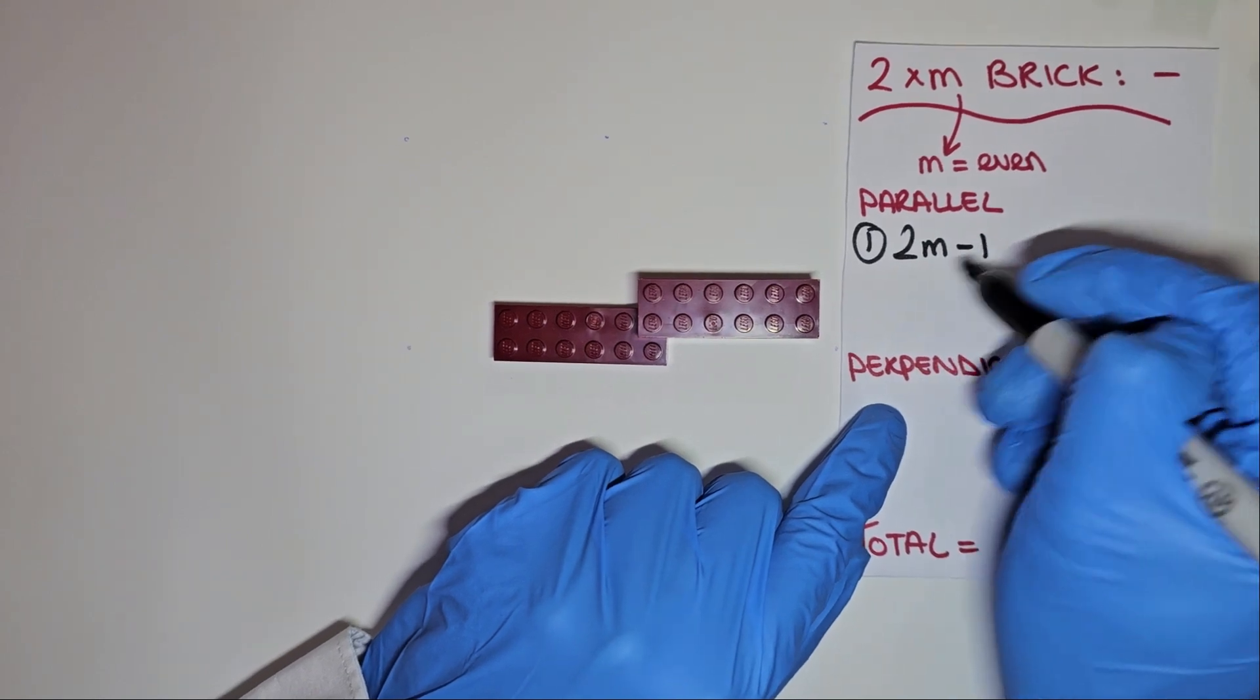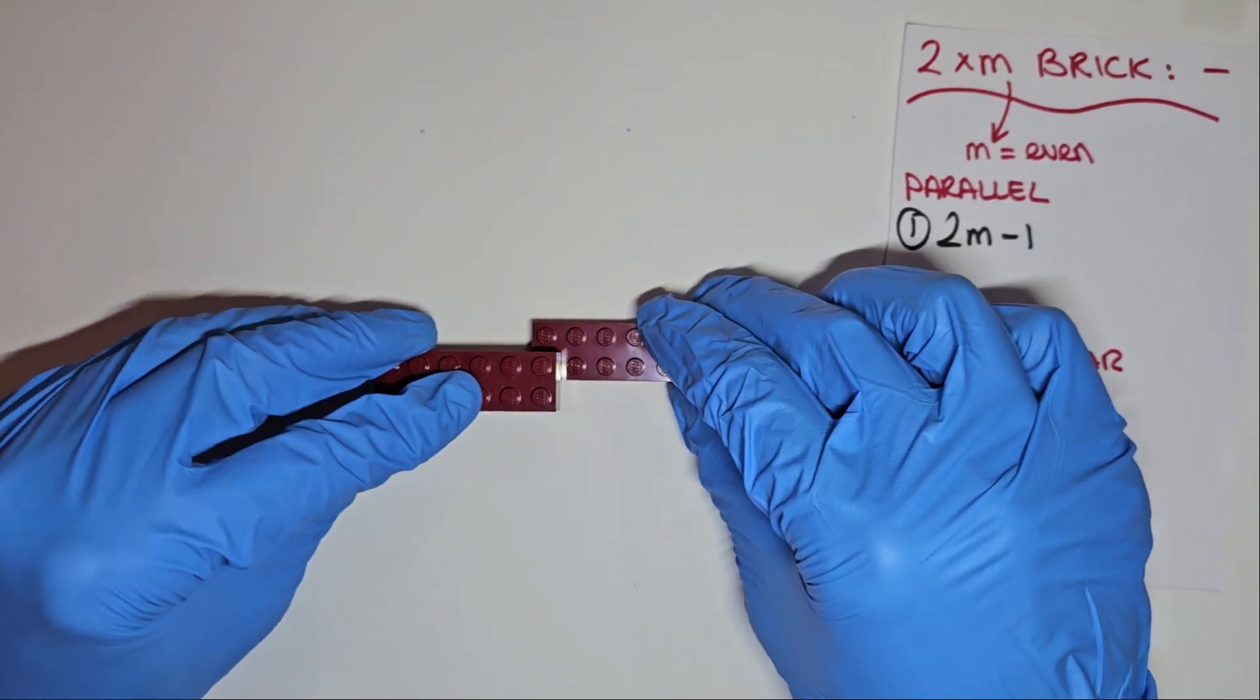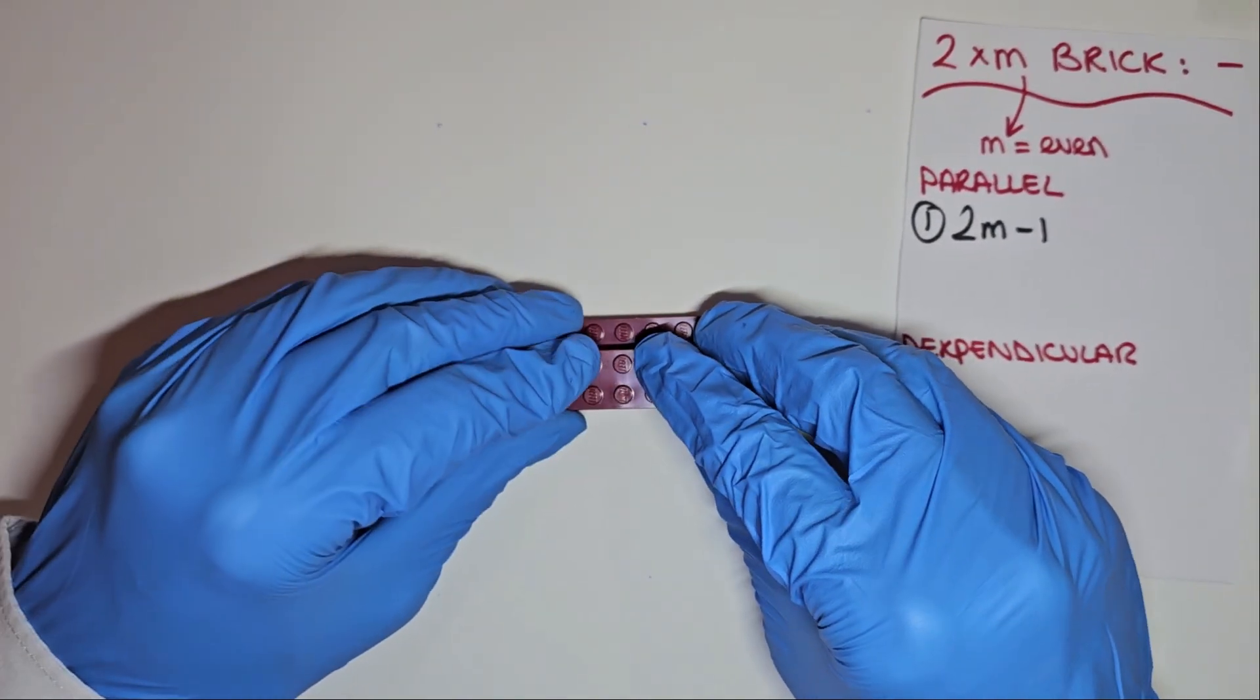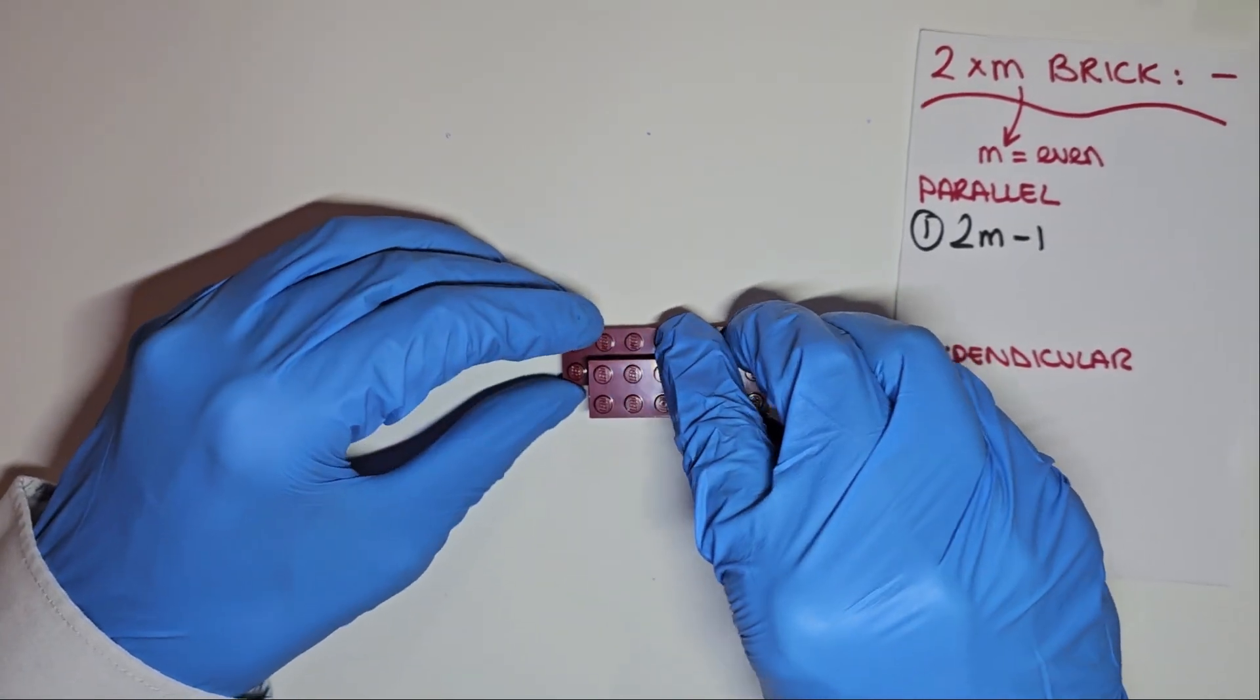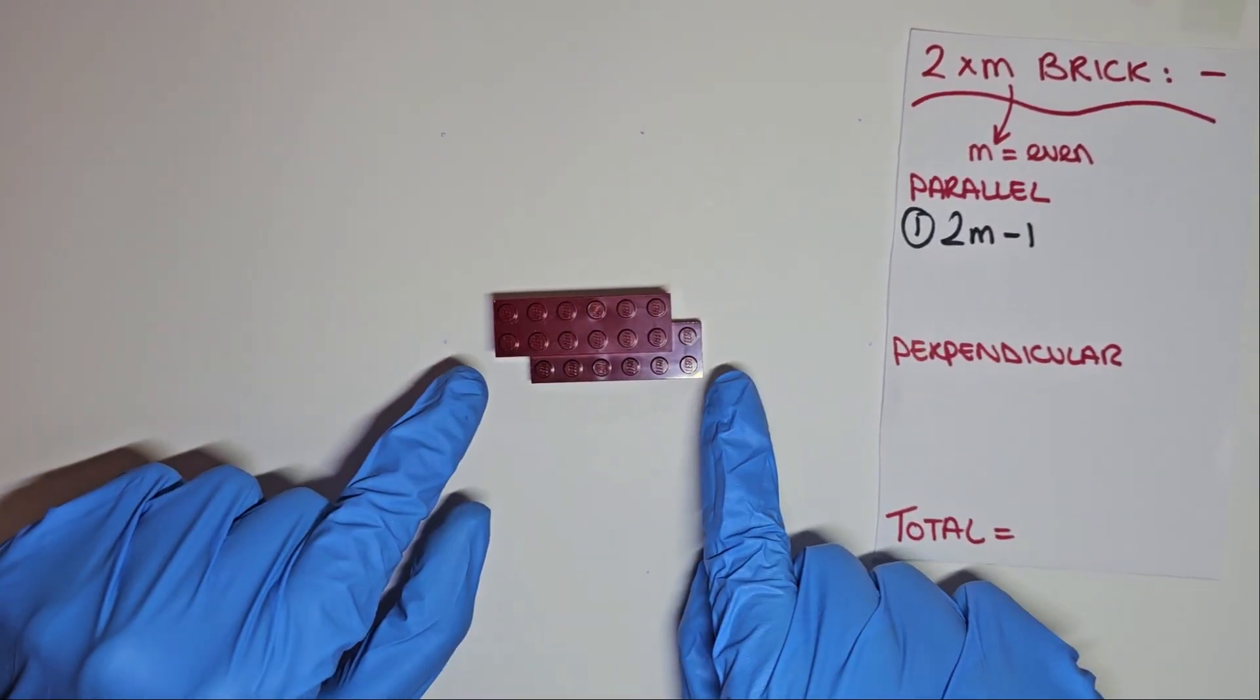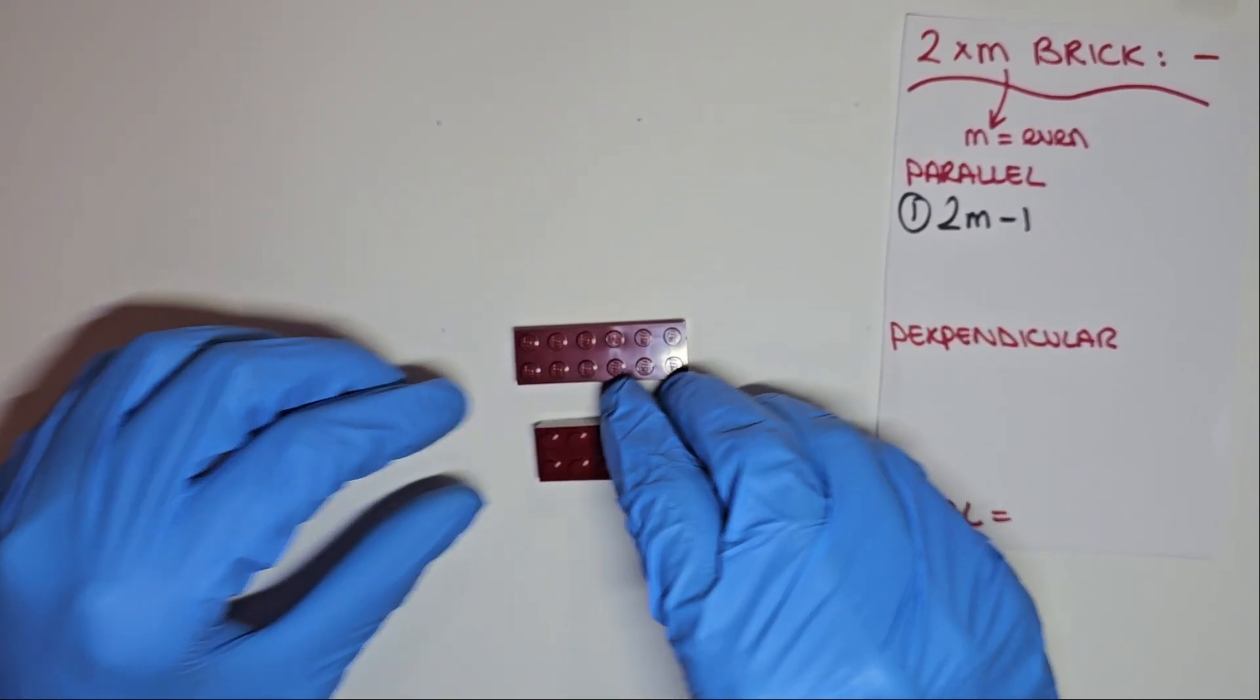Shifting our brick back and down one row, we can continue clicking along, this one, and click all the way to the end, m number of times. If we continue clicking further than this, we encounter the same problem we did with our 2x4 brick, they're just rotations of the ones on this row, previous. In total, we just have the m combinations for this row.